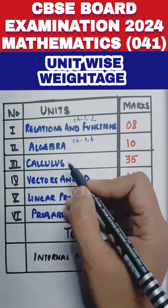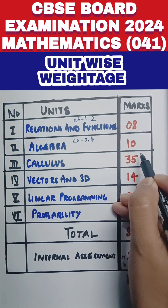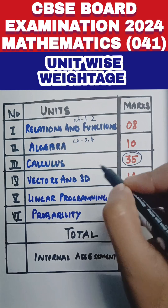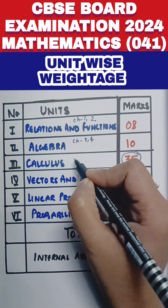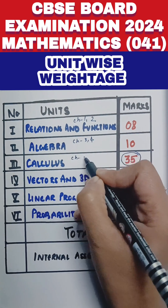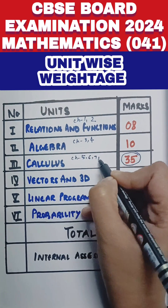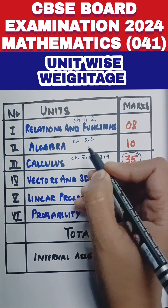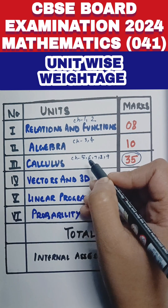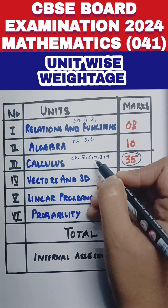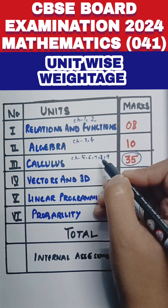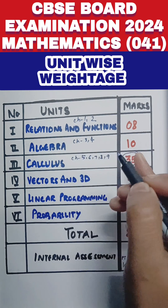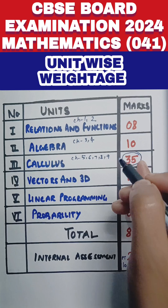Then we have the third unit, that is Calculus — the biggest unit of this syllabus. It contains 35 marks. That means passing marks can be done by Calculus alone. It covers Chapters 5, 6, 7, 8, and 9 — that is Continuity and Differentiability, Application of Derivatives, Integration, Application of Integrals, and Differential Equations. These five chapters will give you 35 marks out of 80.